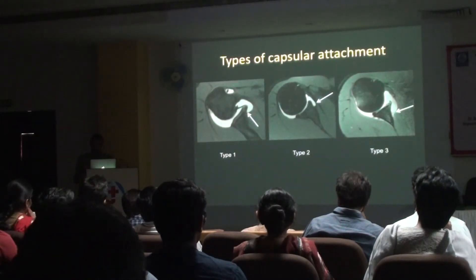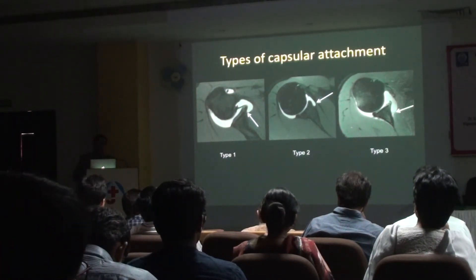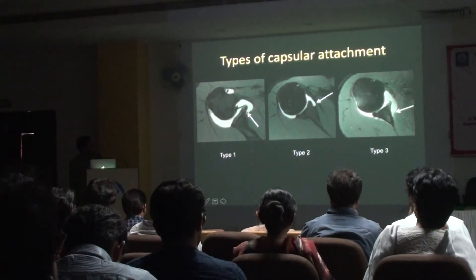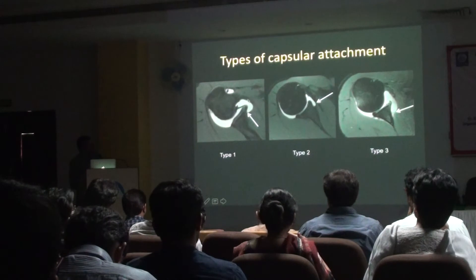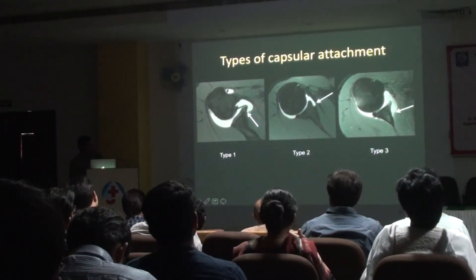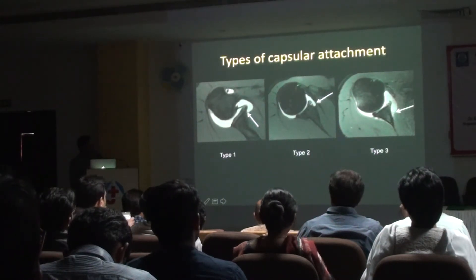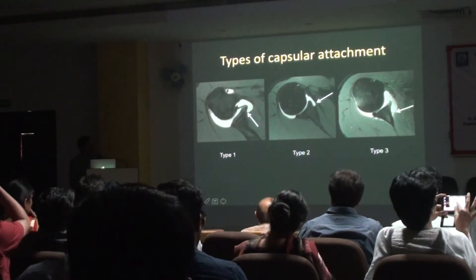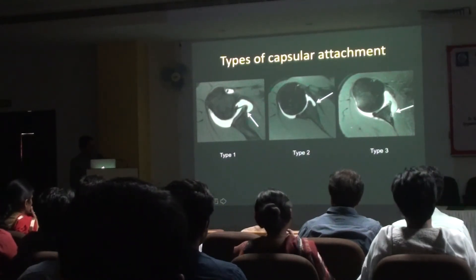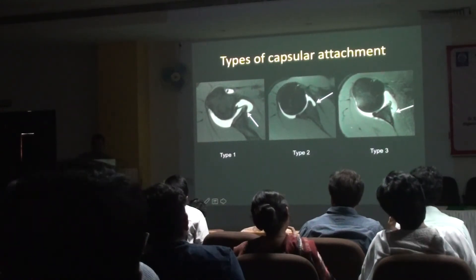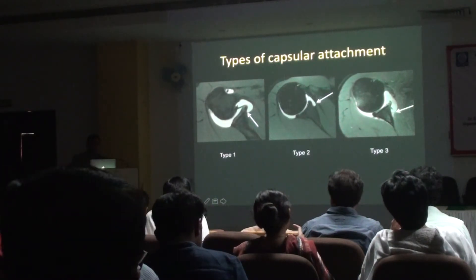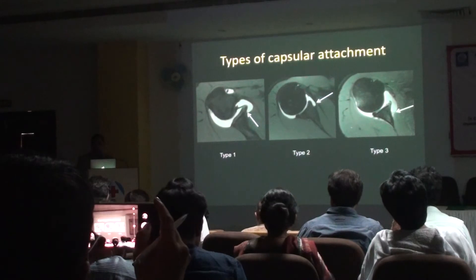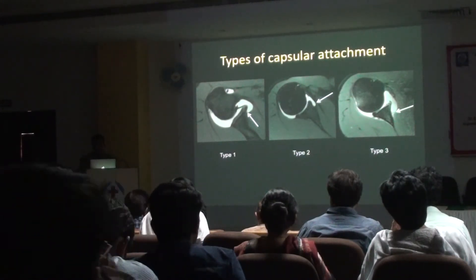An important piece of information for the surgeon is the capsular attachment type. Type 1: the capsule attaches at the level of the labrum. Type 2: it attaches a little bit medial to the labrum — this distance must be less than 1 centimeter. Type 3: it is at the level of the glenoid neck, more than 1 centimeter from the glenoid margin. Type 3 capsular attachments are more prone to subluxation — the surgeon needs to know this patient will have a lax shoulder and is more prone to instability.